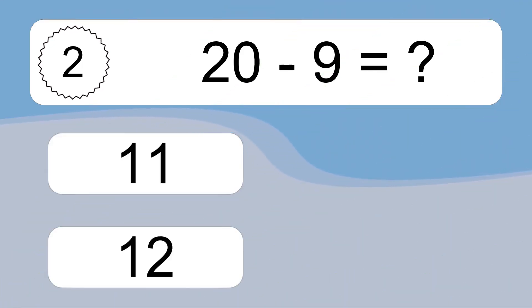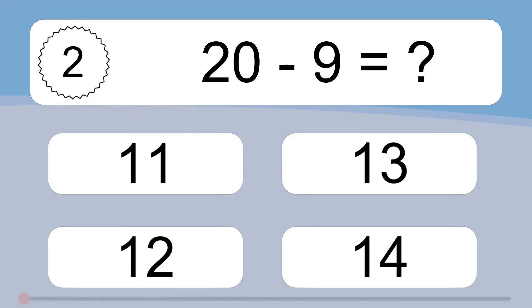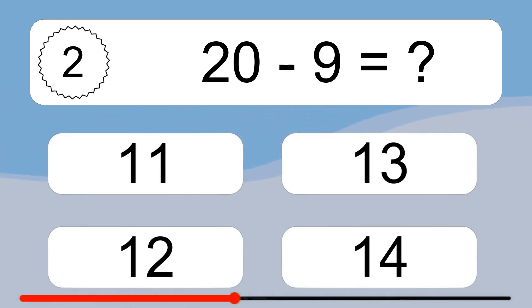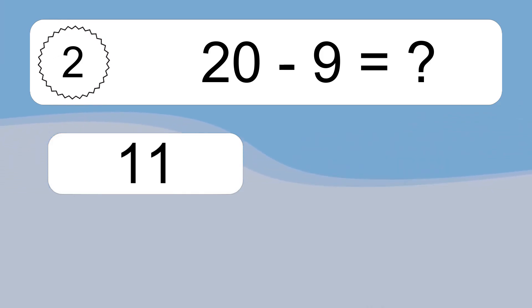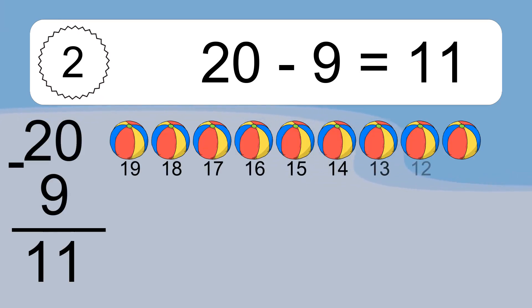20 minus 9 equals what? 20 minus 9 equals 11.